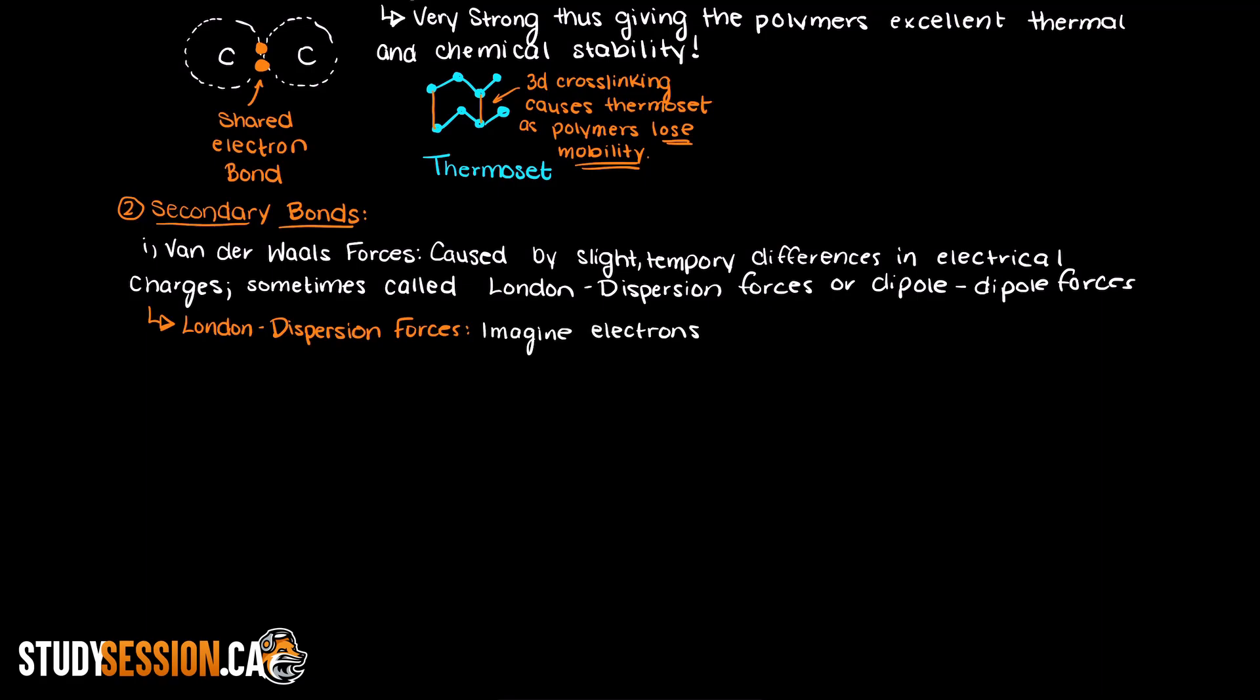The way I like to think of this is imagining the electrons around an atom being random, and this randomness can cause local short distance attractions between molecules. The weak force keeping the two regions together is called a van der Waals force.